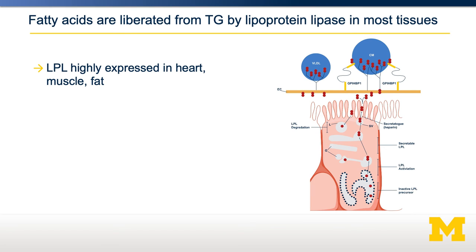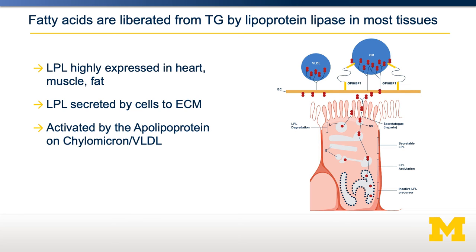On the surface of the myocyte and the adipocyte is a very important enzyme called lipoprotein lipase. It's generated on demand by those particular cells and is secreted outside of the cell and into the extracellular matrix. The LPL can then come in contact with a VLDL or a chylomicron, allowing for the breakdown of triglycerides into fatty acids, which can be absorbed by the adipocyte or the myocyte. Lipoprotein lipase is activated by ApoC2, but it's inactivated by ApoC3, meaning whether a chylomicron or VLDL has ApoC2 or ApoC3 on it will dictate whether it can release those fatty acids into the target cell.